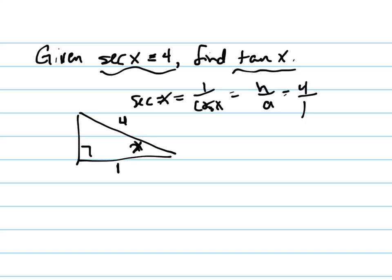And now I can use Pythagorean's Theorem to find this side over here, which is going to be 16, which is 4 squared equals 1 squared plus x squared. So x equals 15, I'm sorry, square root of 15.